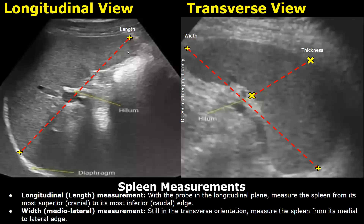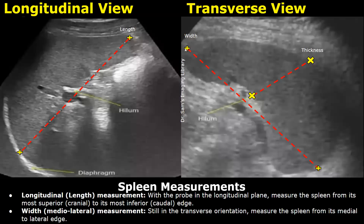After that, you can rotate the probe to a transverse orientation to measure the width and thickness of the spleen. To measure the width, place one caliper at the medial edge of the spleen and the second caliper at its lateral edge, and you can obtain the width of the spleen. These are the medial-lateral measurements.